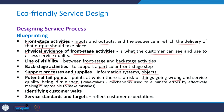In Japanese, these are called poka-yokes — mechanisms used to eliminate errors by effectively making it impossible to make mistakes. To apply poka-yokes, it is important to identify fail points first. Blueprints can also identify customer waits and service standards and targets, which reflect customer expectations across the customer journey.